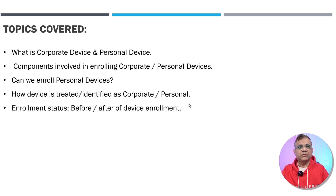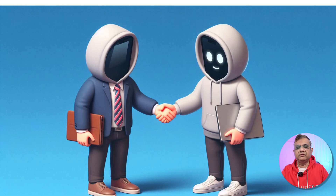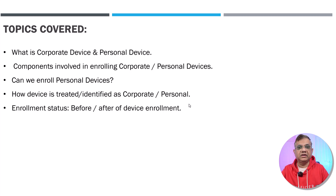In this video, I'm going to discuss: what exactly is a corporate device and a personal device; the components involved in enrolling both; whether we can enroll personal devices and what parameters control that; how a device is identified as personal or corporate; and finally, the enrollment status of various devices before and after enrollment.